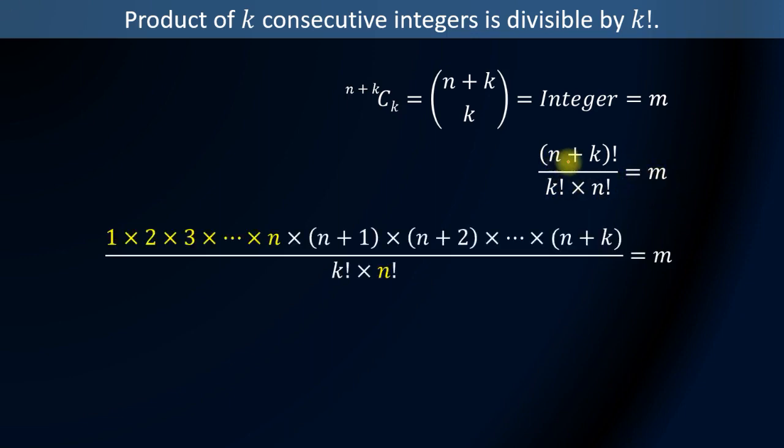Now we can write n plus k factorial as product of first n plus k natural numbers, because we know that n factorial is equal to product of first n natural numbers. Now the denominator will remain as it is, but the advantage to write in this form is that we can cancel this one, that is 1 times 2 times 3 all the way up to n by n factorial, because they are the same quantity.